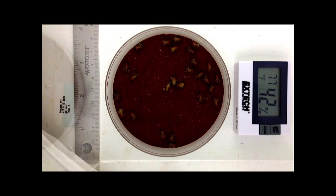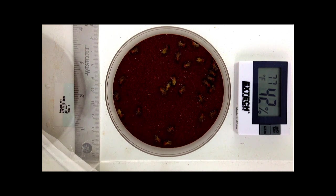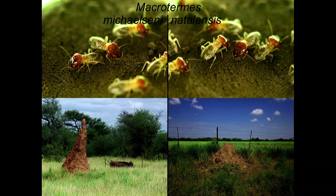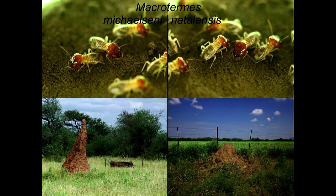The reason we're in Namibia is our collaborator Scott Turner had identified a very interesting situation with two closely related species: Macrotermes michaelseni and Macrotermes natalensis. Morphologically, they're almost completely indistinguishable — so identical when you look at them that I haven't bothered showing you photos of both species. But the mounds they build are completely different.